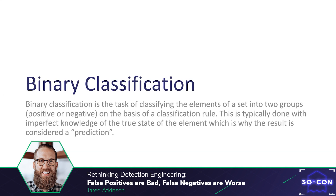It's important to remember that we are making these decisions with imperfect knowledge — we don't actually know the true state of the event, but we use our understanding of the situation to make the best decision possible. For this reason we refer to this decision as a prediction. This section will dive into many concepts of binary classification which will help facilitate later discussions about pitfalls in our current detection engineering process.